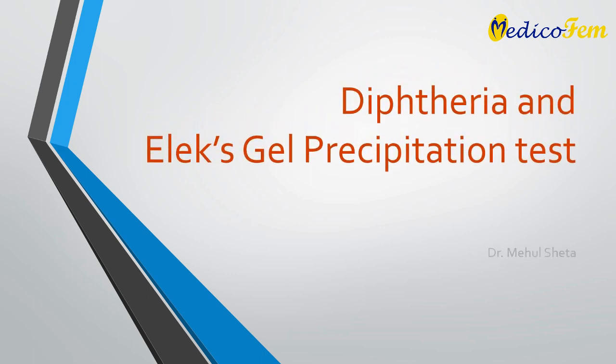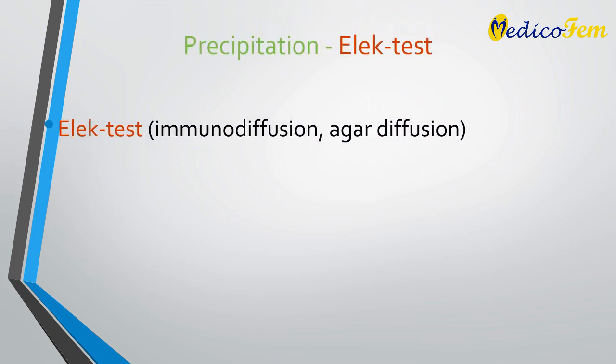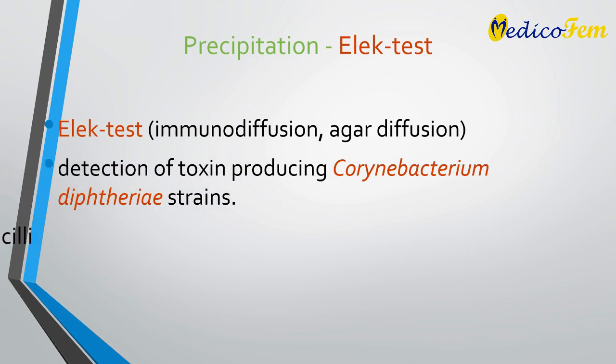This presentation is about diphtheria and the Elek gel test. The Elek gel precipitation test is an immunodiffusion in agar used to detect toxin produced by Corynebacterium diphtheriae.